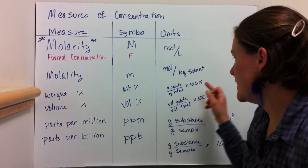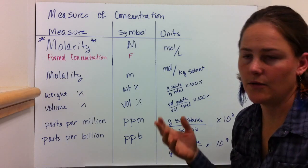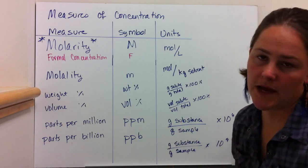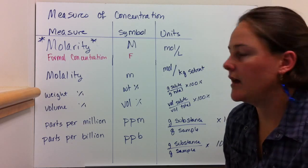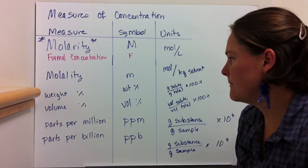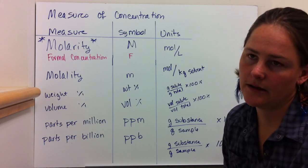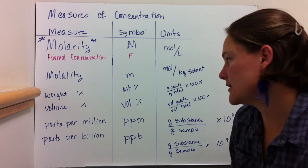Weight percent and volume percent are basically just the grams of solute over the grams total times 100 percent, either by mass or by volume. Weight percent is frequently used in gravimetric analysis, we'll talk about in the next video.